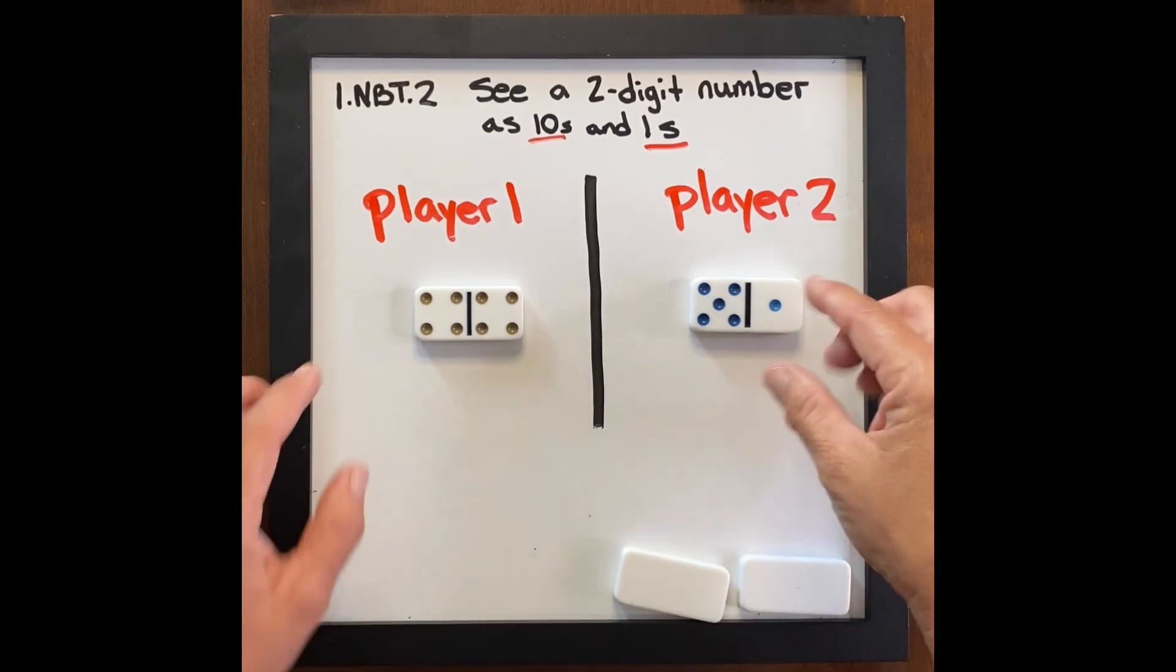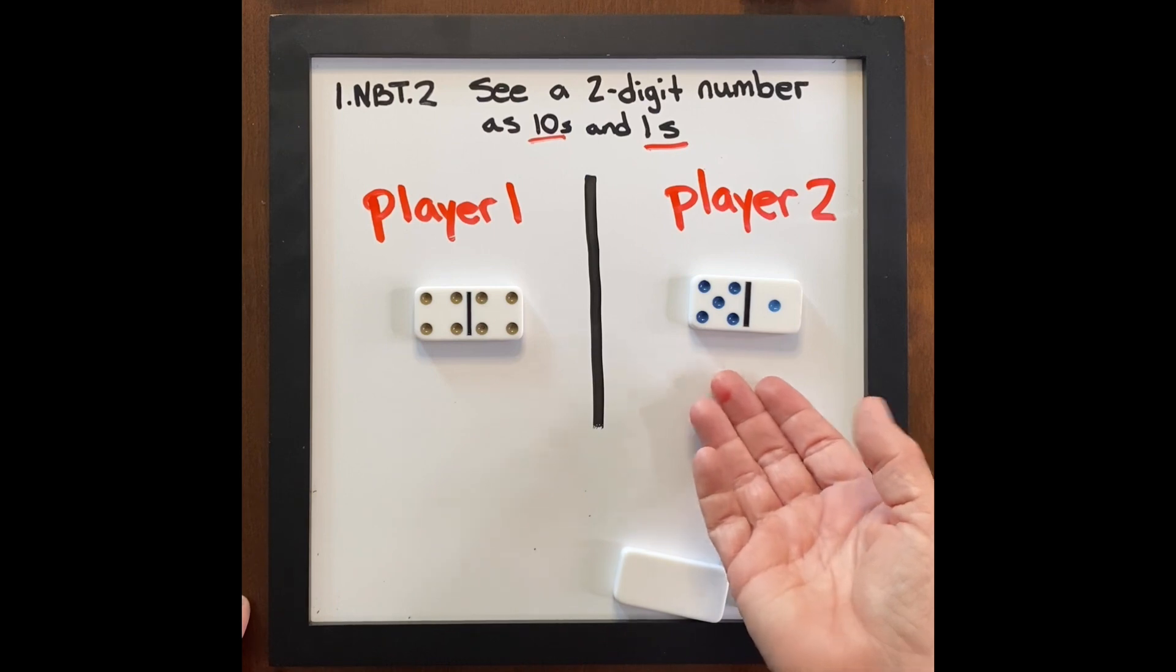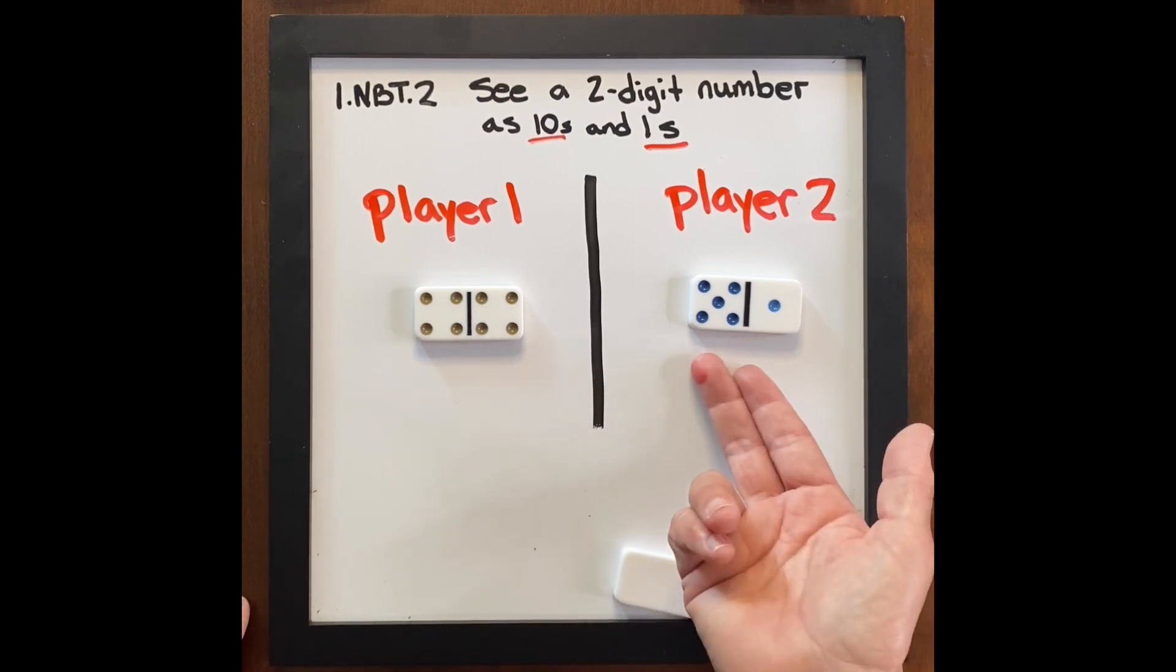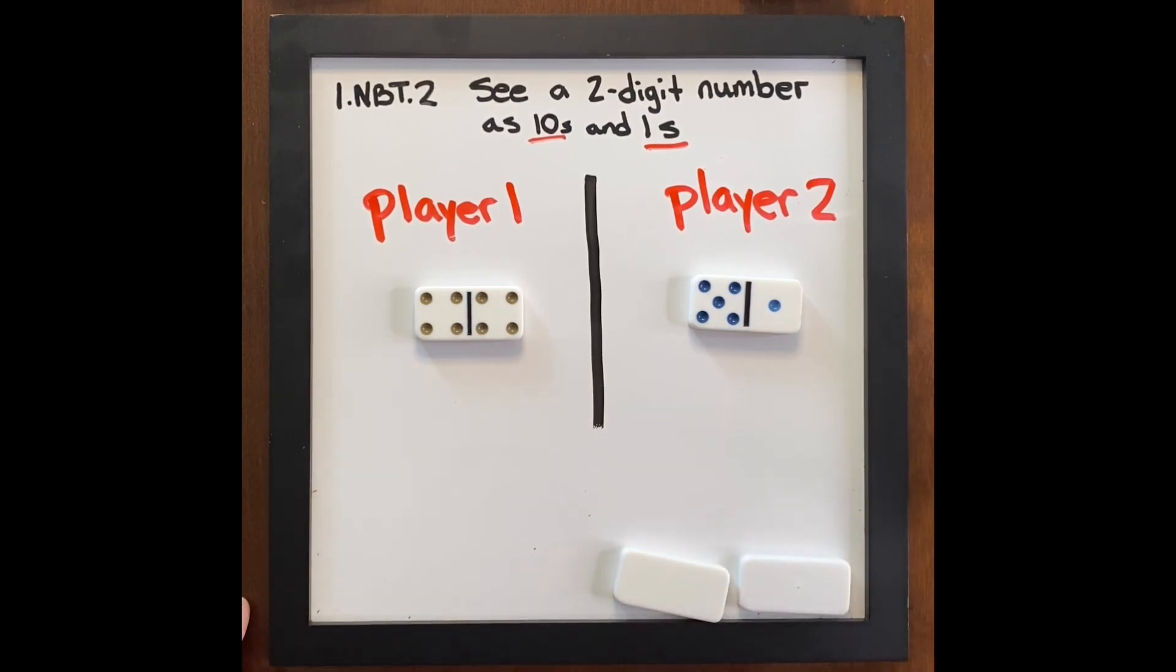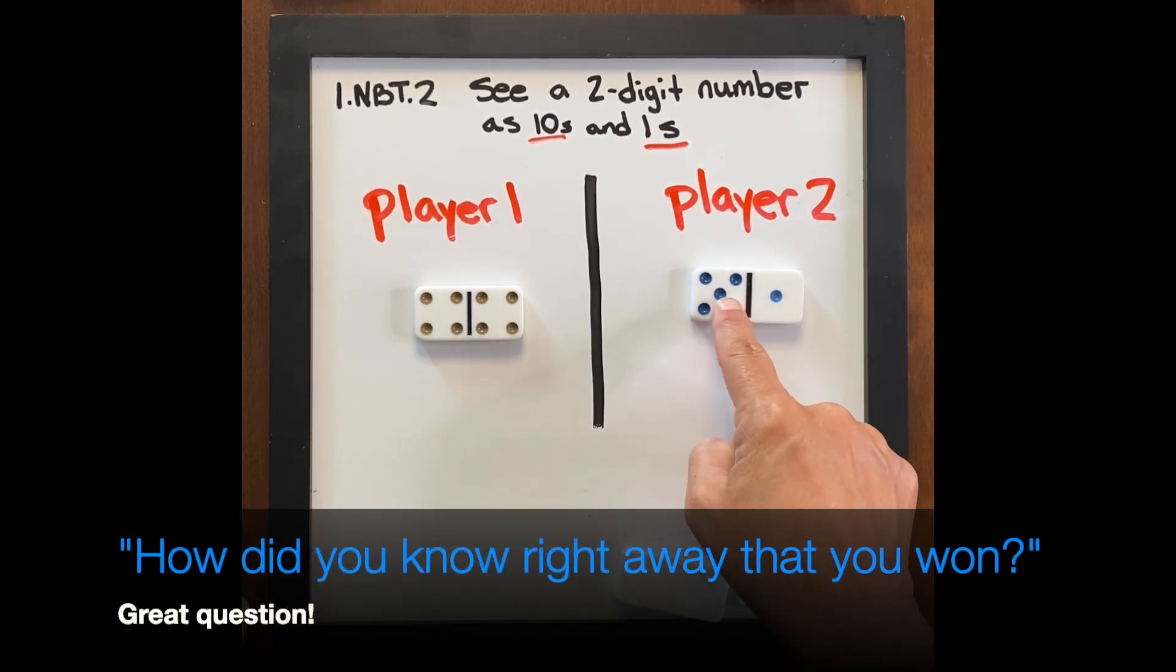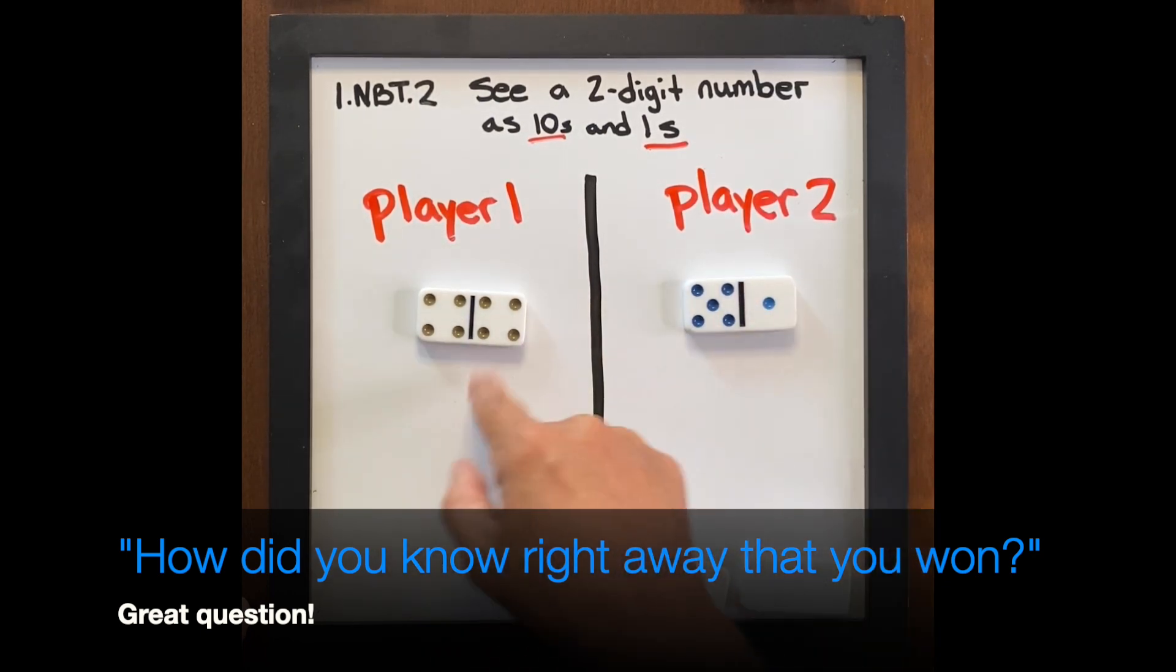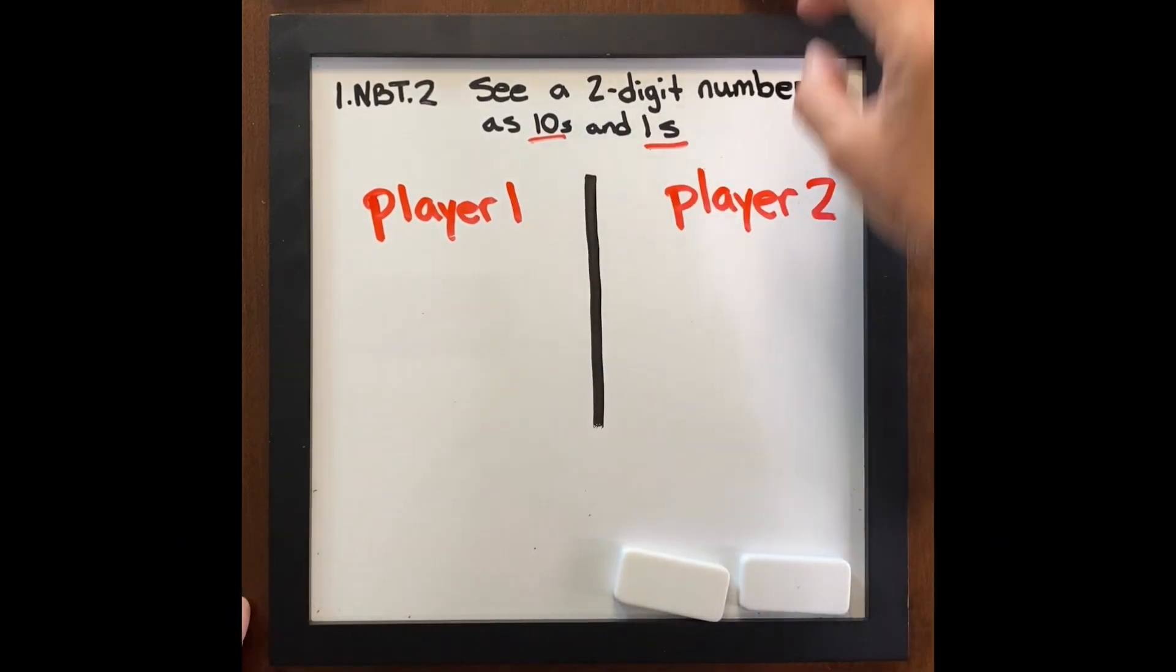Or you might walk up and say, hey, player two, how did you win that over that? How did you know right away that you won? That's a great question. How did you know right away that you won? Player two would say, I have five tens, which is 50. And they have four tens, which is 40. And so my number 51 is greater than 44. So player two wins.